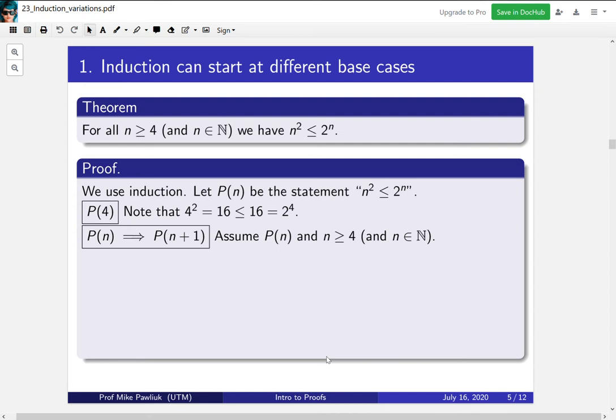And for the induction step, it goes as usual with one additional assumption. We're going to assume that p(n) is true for some n, and we're going to assume that n is greater or equal to 4. This is the part that's different from usual induction. Let's see where we're going to use that throughout the proof.